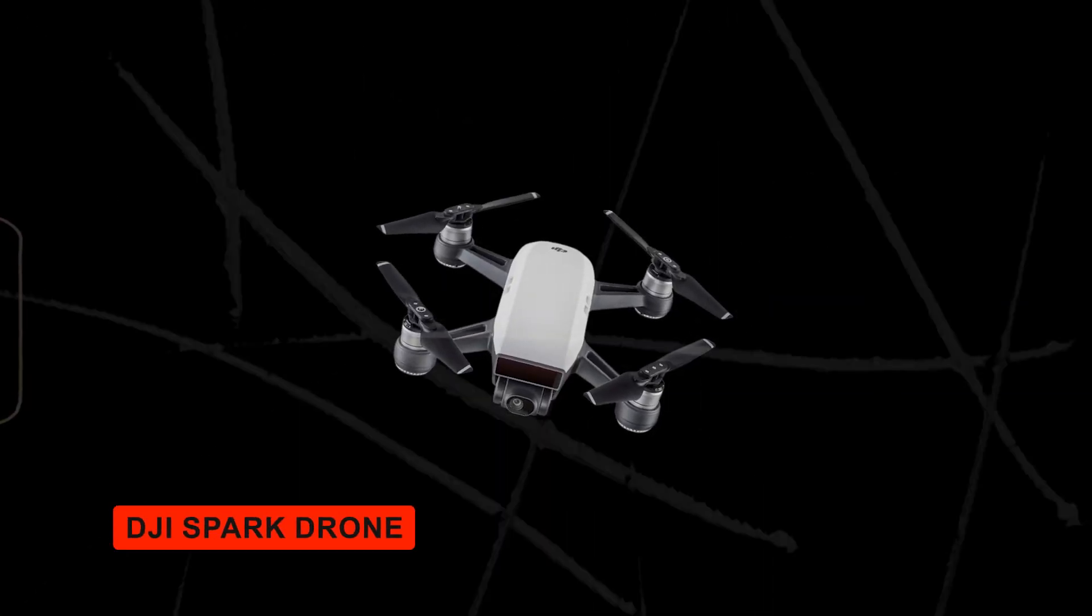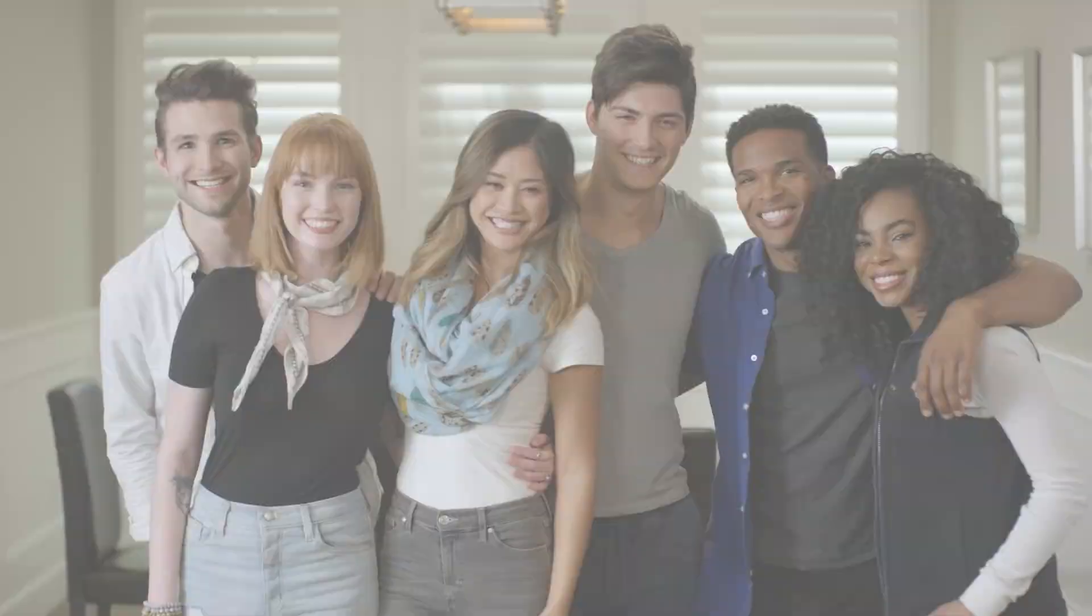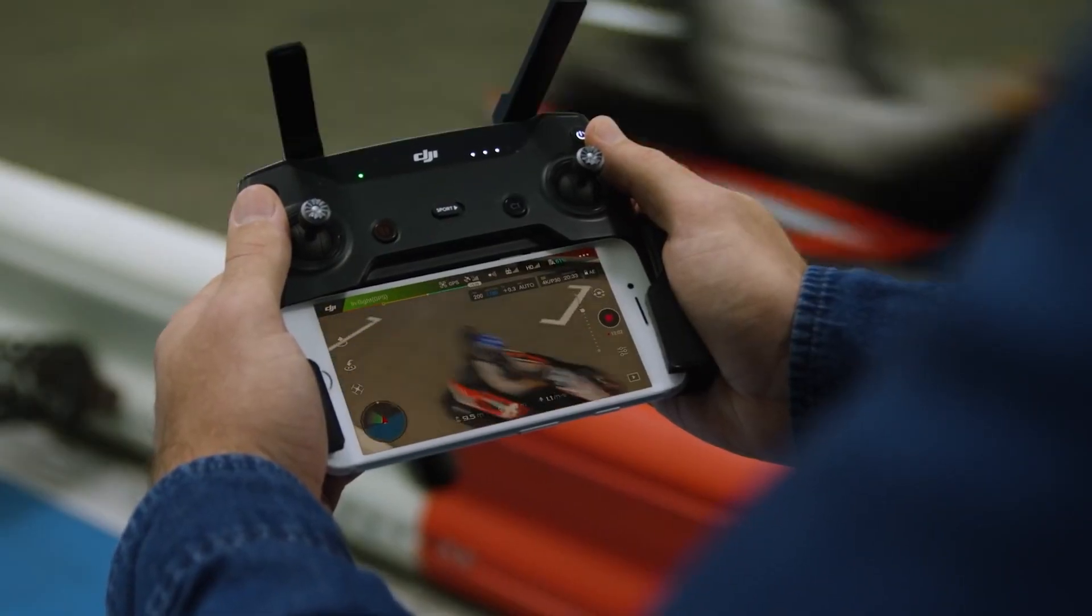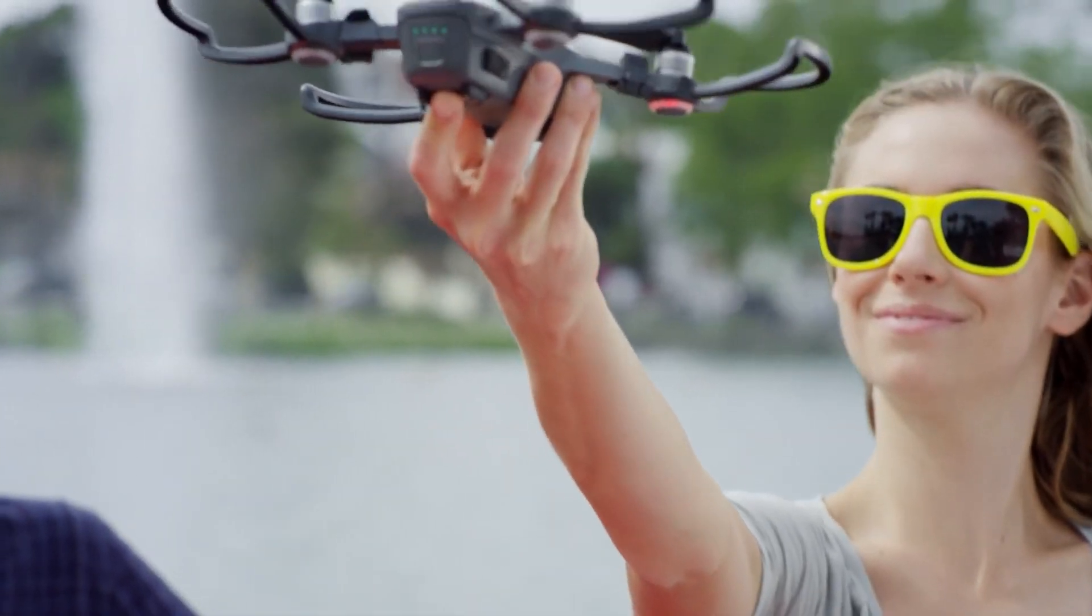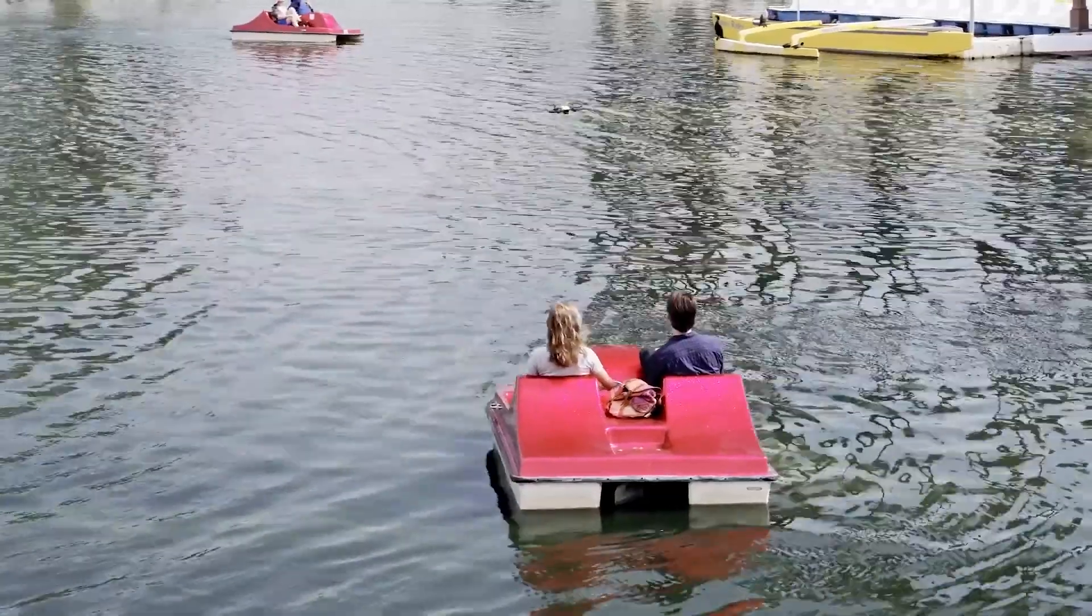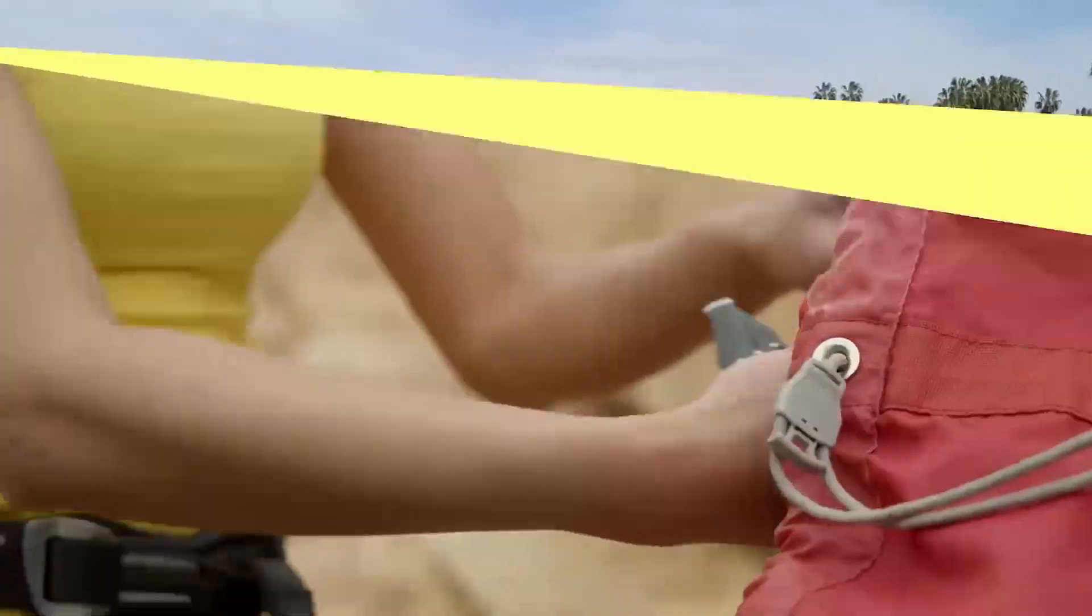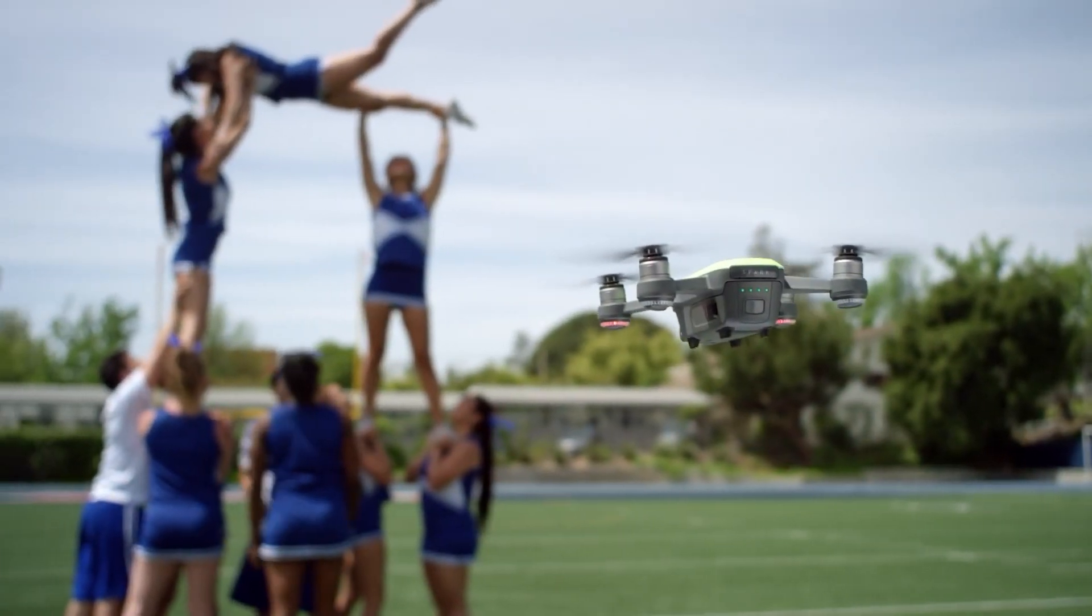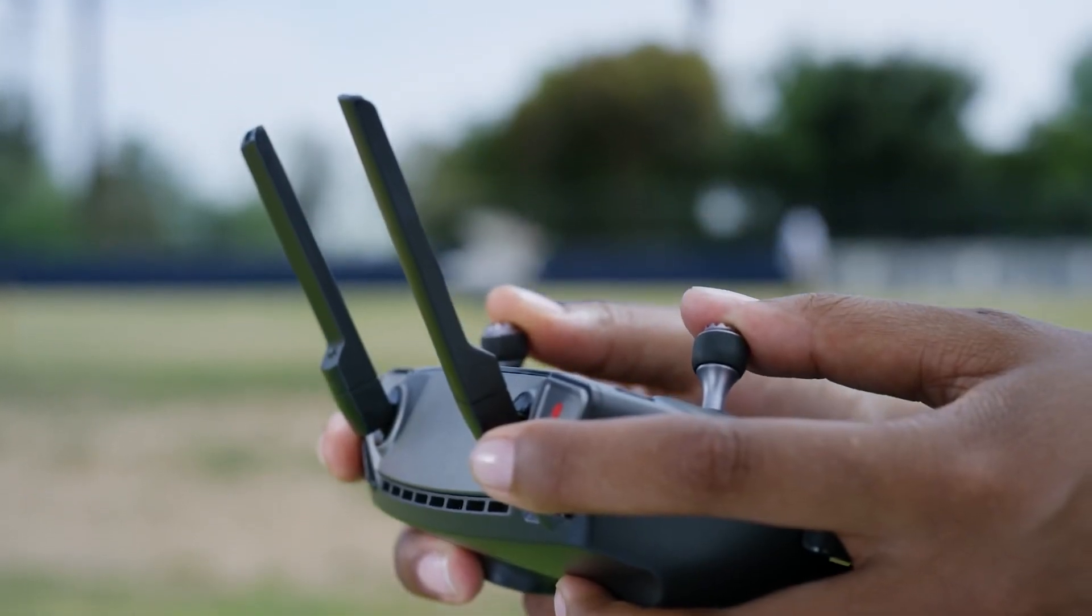DJI Spark Drone. This compact drone is perfect for capturing high-quality aerial footage discreetly. It features a 12-megapixel camera and can communicate with up to 24 satellites for precise positioning. Its small size allows for takeoff from the palm and easy control, making it ideal for close-range surveillance.